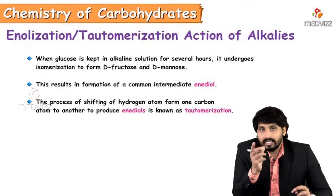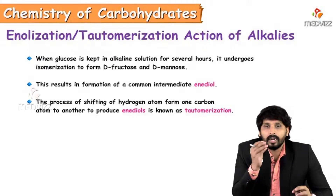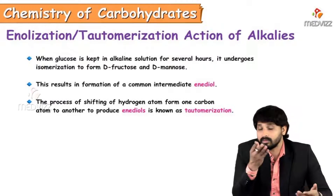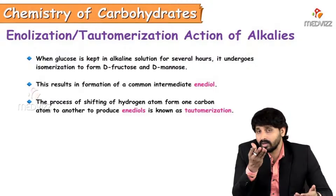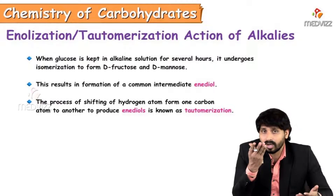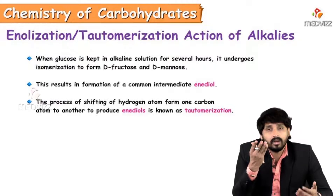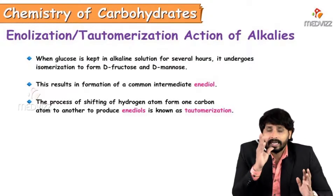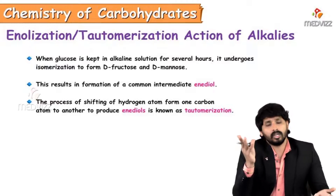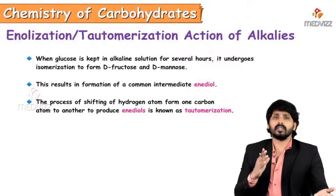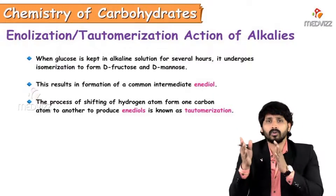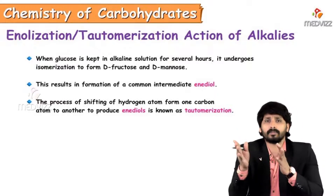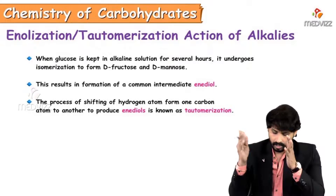The next reaction is enolization, or tautomerization. When glucose is kept in alkaline solution for several hours, it undergoes isomerization to form fructose and mannose. This is similar to what was discussed in Kiliani synthesis — when glucose is treated with mild alkalis, it can form fructose and mannose. The difference between glucose and fructose lies in the first two carbons.